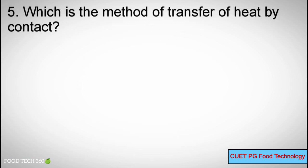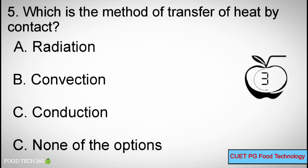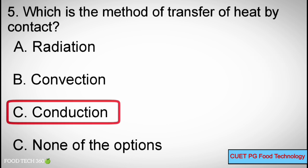Question number 5. Which is the method of transfer of heat by contact? Options A: Radiation, B: Convection, C: Conduction, D: None of the options. Correct answer: C, Conduction.